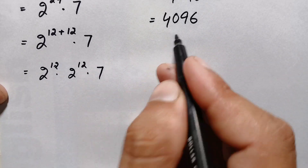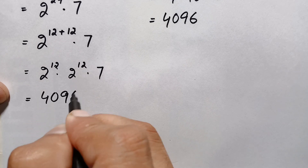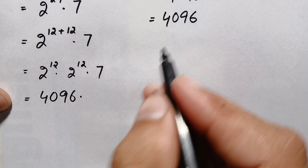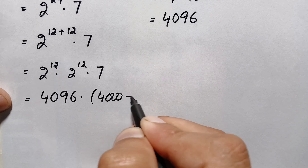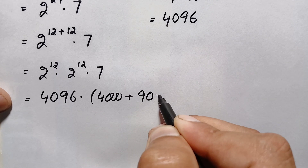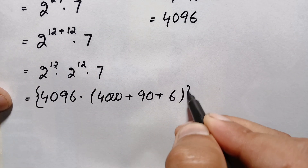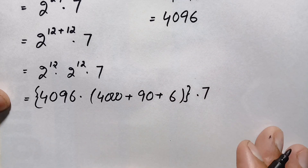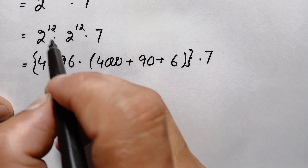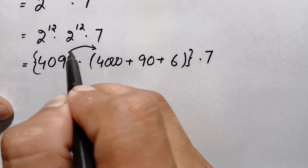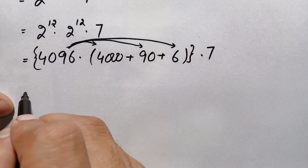We replace both occurrences of 2 raised to power 12 with 4096, giving us 4096 times 4096 times 7. We write the second 4096 as the sum of 4000 plus 90 plus 6, and group the two 4096 values in brackets. We will first multiply those two numbers together, then multiply the result by 7.